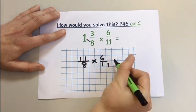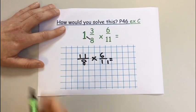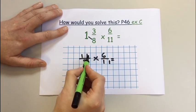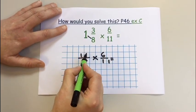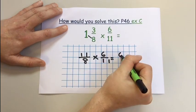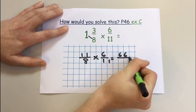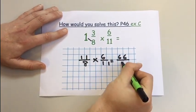Now we repeat the process that we've been looking at for multiplying fractions in other videos. Multiply the two numerators together. 11 times 6 is 66. 8 times 11 is 88.